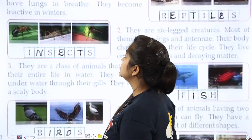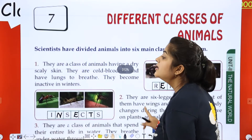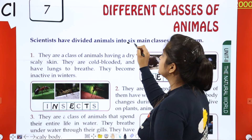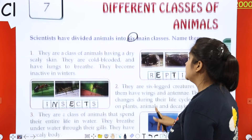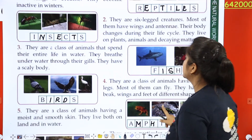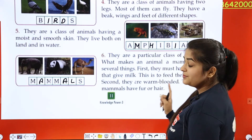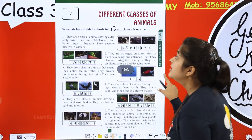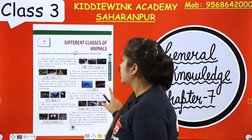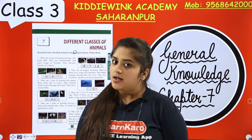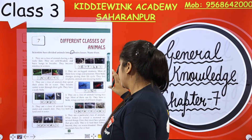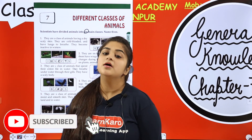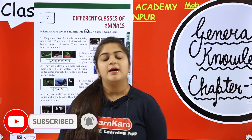Scientists have divided animals into six classes. We have studied all six classes: Reptiles, Insects, Fish, Birds, Amphibians, and Mammals. I have explained their features to you. Now you have to complete chapter number 7 on page number 11. You will understand this properly — complete it and send it to me. Bye-bye, thank you.